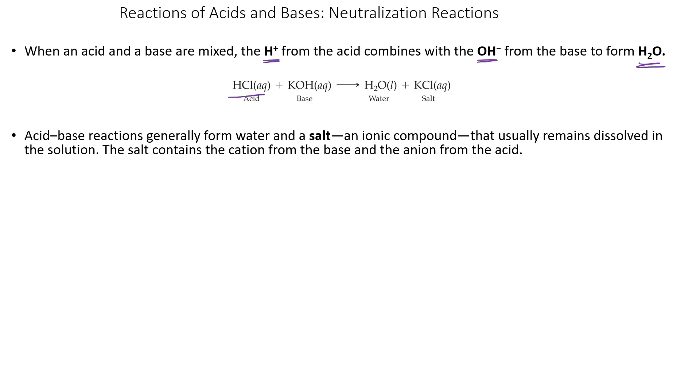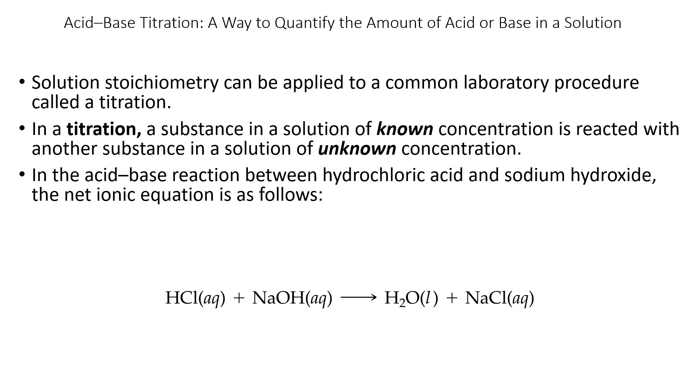If our acid is HCl and our base is KOH, then what we really have in solution is H+ and chloride because it's strong, and we also have potassium and hydroxide because it's strong. Then the H+ and the OH- combine together to form water, and we have potassium and chloride left over, and that makes the salt. So it's always going to be an acid plus a base gives water and a salt. The salt is an ionic compound that comes from the cation from the base and the anion from the acid.